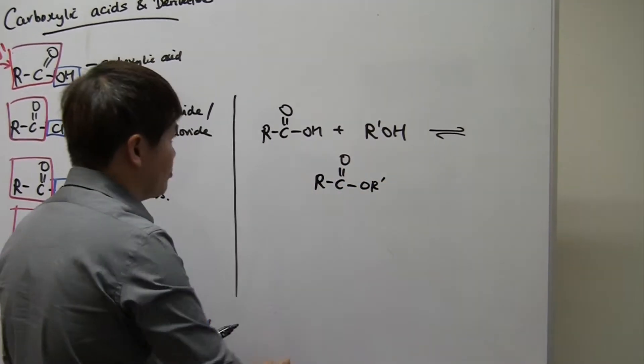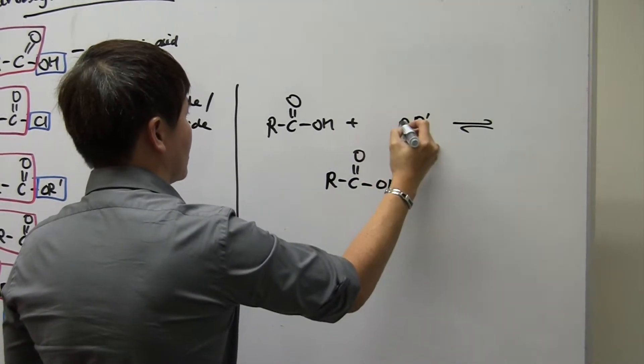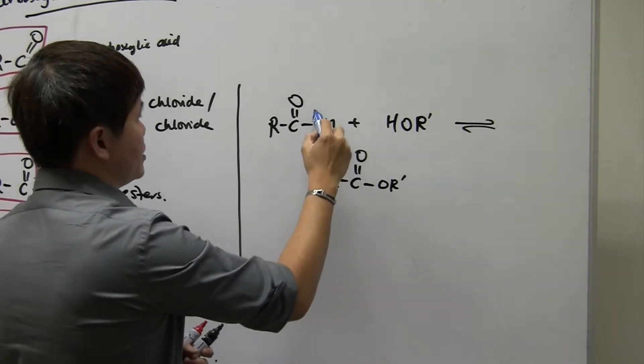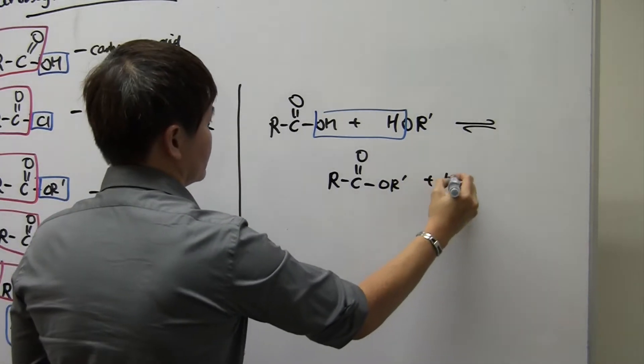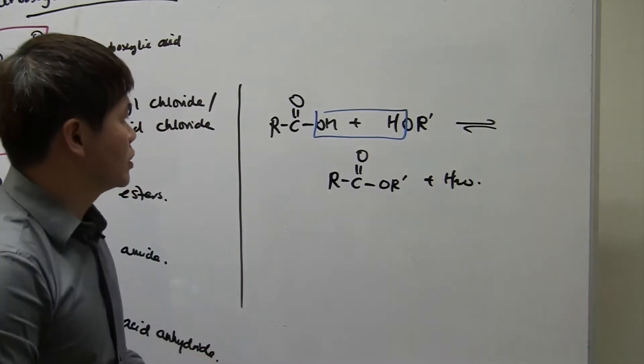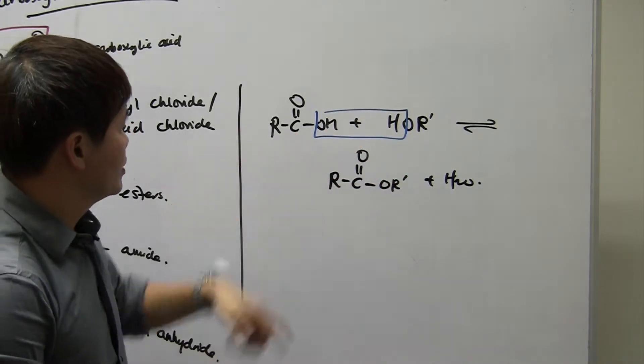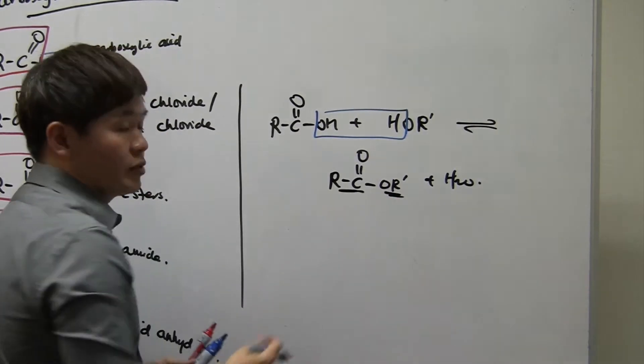How is this ester formed? I'm going to show it to you using a different way of drawing alcohol. Alcohol is drawn in the other direction. What actually happens is the OH group and the H group comes out to form a water. This is water coming out and basically the O atom forms a bond with the carbon. So basically this part here is from the alcohol. This part here is from the acid.